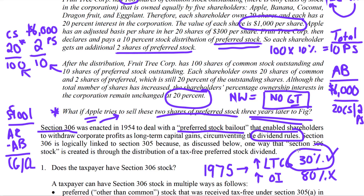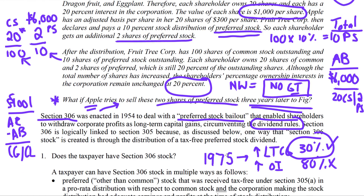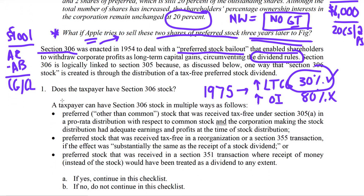We've seen this anti-abuse concern throughout corporate tax — in the redemption rules of Section 302, where a redemption is treated as either a Section 1001 capital gain/loss or a Section 301 distribution subject to dividend treatment. I've created a checklist to help determine if Section 306 applies. The first question is: does the taxpayer have Section 306 stock? There are three major categories where Section 306 stock applies.